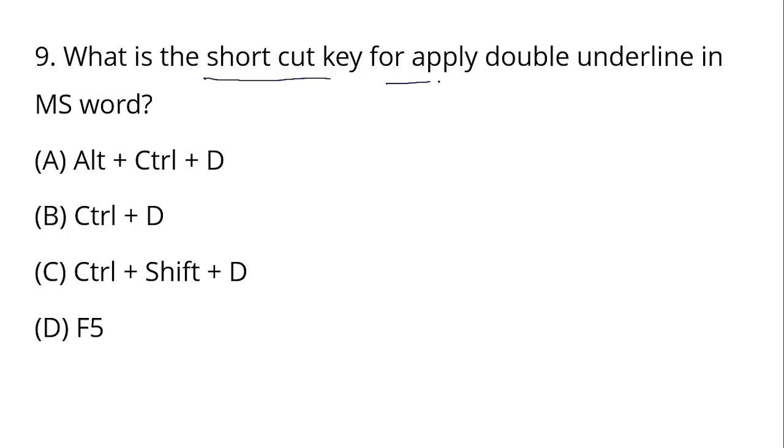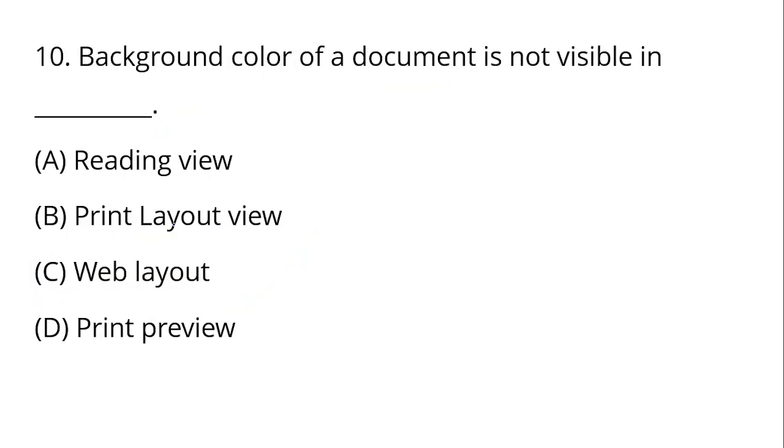What is the shortcut key to apply double underline in Microsoft Word? Double underline to apply - shortcut key Control Shift D. Control Shift D is for double underline. Control D opens the font dialog box. To print preview and print background color, by default print layout view is used.